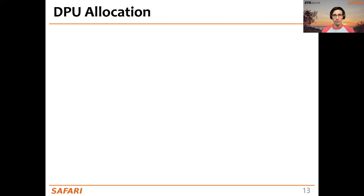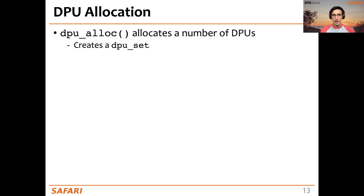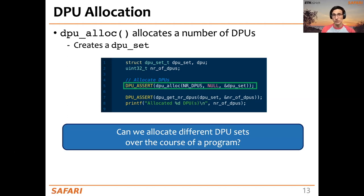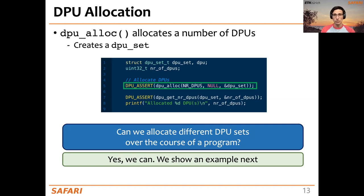When starting a program that uses the PIM accelerator, the first thing to do is allocate DPUs. With more than 2,500 DPUs in the system, we allocate DPUs using a library call called DPUAlloc, which creates a DPU set—the set of DPUs we are going to use in our program. We indicate the number of DPUs we want and get back an identifier for the DPU set. It is also possible to allocate different DPU sets over the course of a program, and we may want to deallocate them using DPU-free.